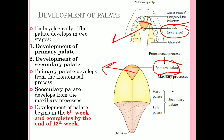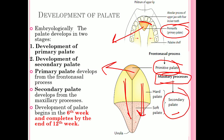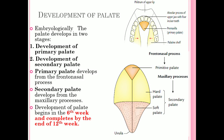The primitive palate or pre-maxilla develops from the frontonasal process. The secondary palate forms the rest of the hard palate and the whole soft palate, developing from the maxillary process. The premaxillary region is formed by the frontonasal process, while the rest of the palate is the secondary palate, formed by the maxillary process.